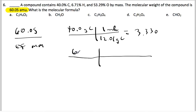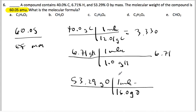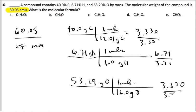Next, 6.71 grams of hydrogen divided by 1.0 grams per mole equals 6.71 moles of hydrogen. And 53.29 grams of oxygen divided by 16.0 grams per mole equals 3.330 moles of oxygen. Dividing by the smallest number — 3.33 — gives carbon: 1, hydrogen: 2, oxygen: 1. So the empirical formula is CH₂O.